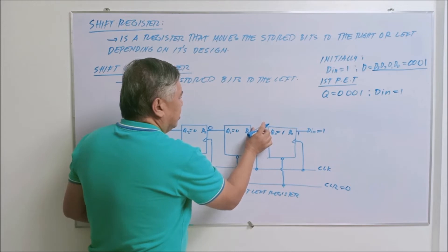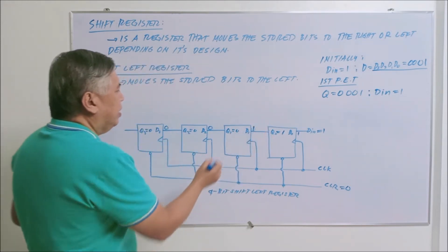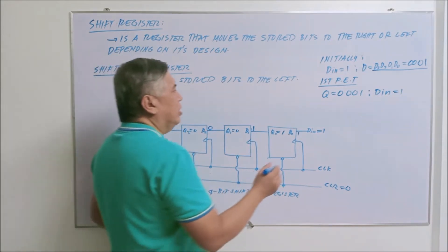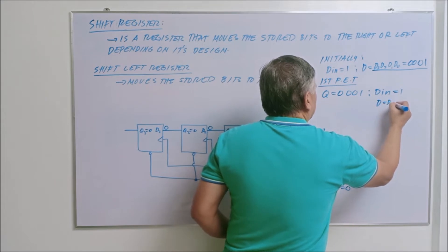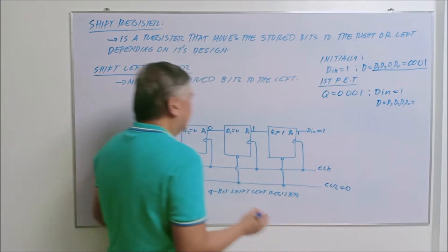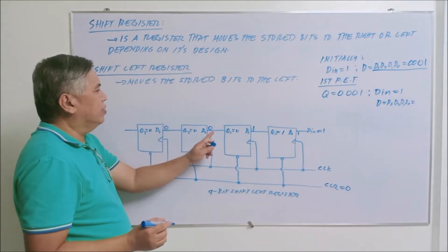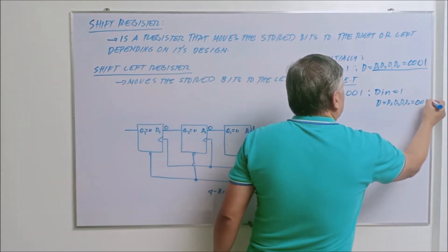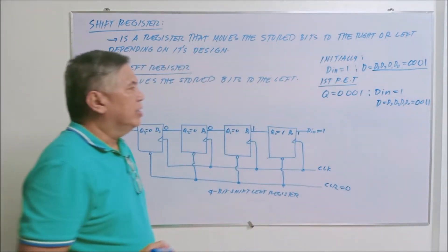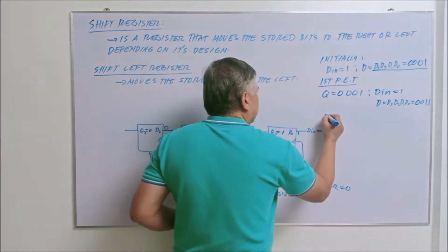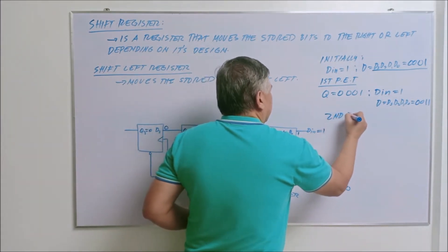So this becomes one — Q sub zero, which is one, is now one. Since this is zero, these will still be zero zero zero. So initially, your D now — which equals D sub three, D sub two, D sub one, and D sub zero — will have a value of zero zero one one. That will be your D before the second positive edge triggering of the clock.